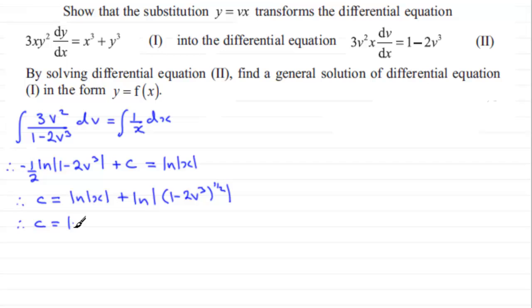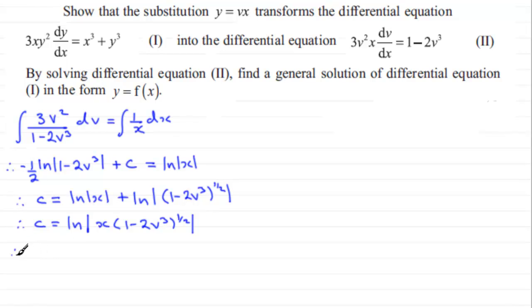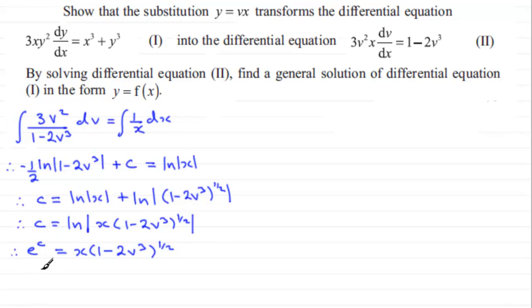Because we're adding two logs together, we can combine them: c equals the natural log of the modulus of x multiplied by 1 minus 2v cubed to the power of a half. Now we can anti-log both sides, so e to the power c equals x multiplied by 1 minus 2v cubed, all to the power of a half.